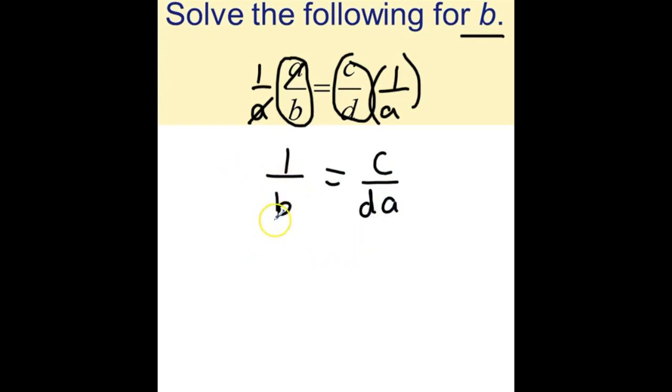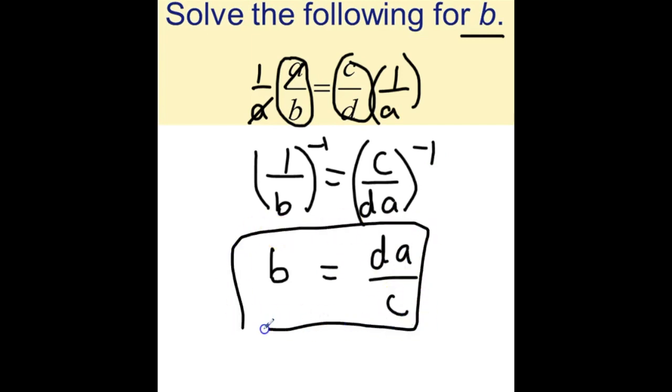Now to get B by itself, you might recall the rule of reciprocals. If you take the reciprocal of the left side, you get B, but you must also take the reciprocal of the right side, and therefore you get B equals DA over C. That is just one way to solve for B in this problem.